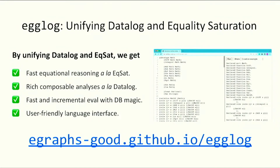Q: One of the big problems with eGraphs is the extraction problem and common sub-expression elimination. Does the combination with datalog help at that end? A: The extraction problem is still quite open — many techniques have been proposed, and it was discussed in the eGraphs workshop. On the egglog side, it actually makes the problem slightly harder because egglog works with databases, tuples, and functions rather than terms. However, egglog does support term extraction, with some additional implementation overhead.